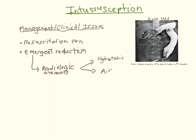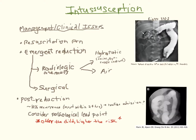For a stable patient with ileocolonic intussusception, emergent reduction is preferred using air or hydrostatic enemas, and is about 80-95% successful. It is important that a pediatric surgeon be available before attempted reduction, in case reduction fails or the patient decompensates. Some institutions routinely admit patients following reduction because the recurrence rate is high and will usually occur within the first 24 hours. The older the child, the higher the risk of a lead point, so consider this in children older than 2.